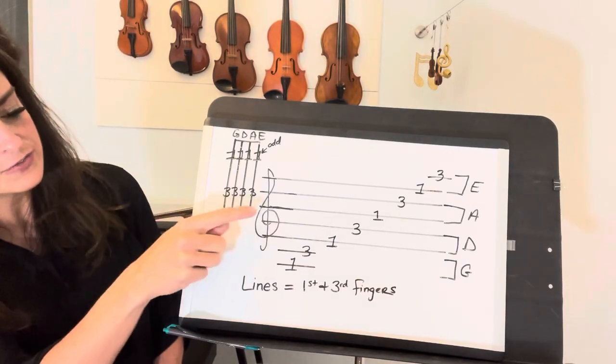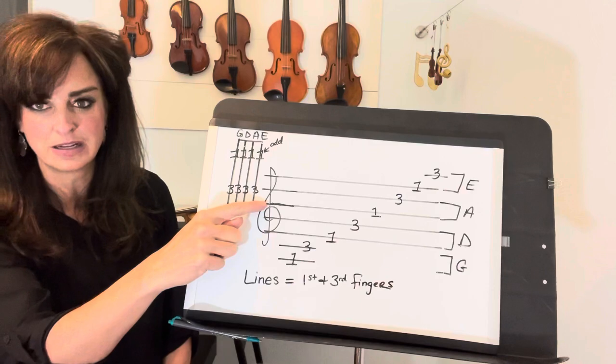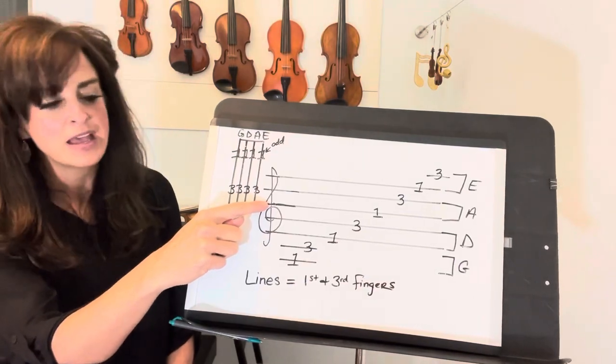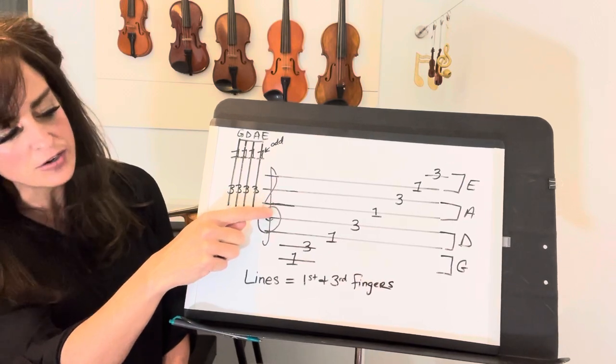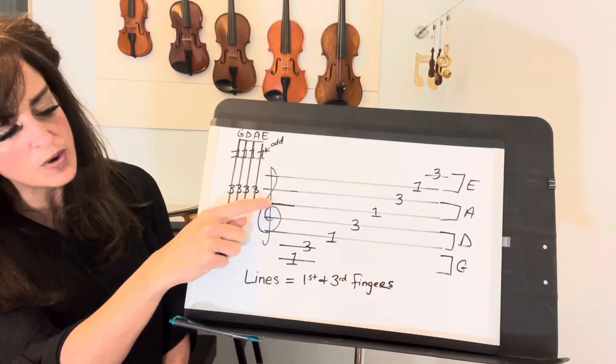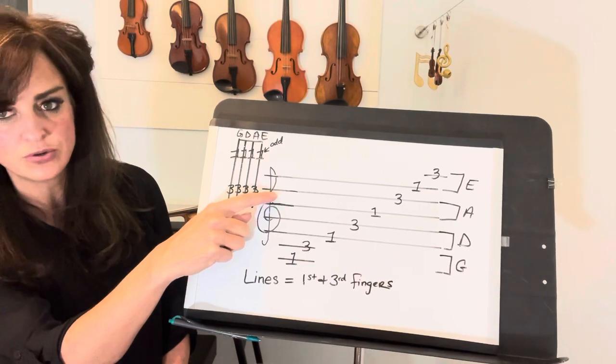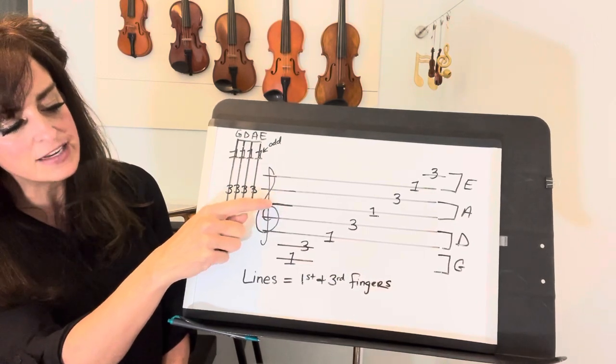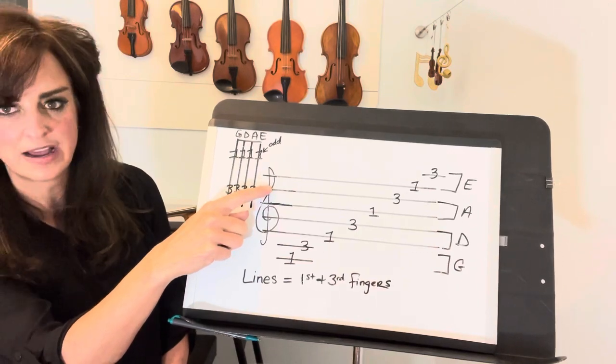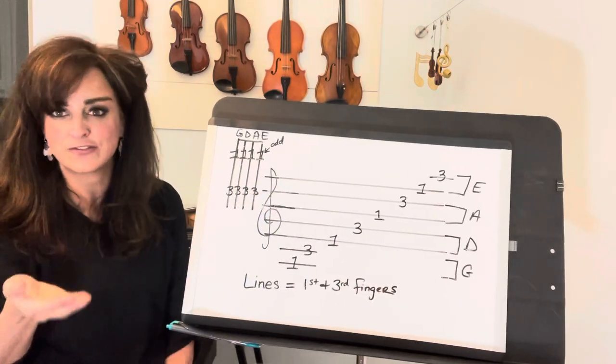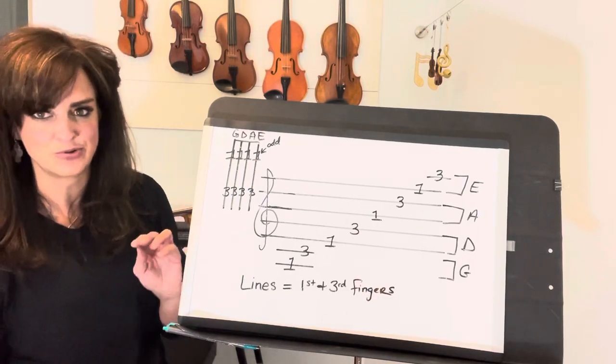For instance, if you go to the A string, that's the middle line which is B - that's one on A. So if you go one below one that's zero which is open A. If you go one above one that's two, and those are spaces. And if this is a one, you know it alternates, so this has to be a three on A. If you can find your ones on any string, you can find all the other notes.